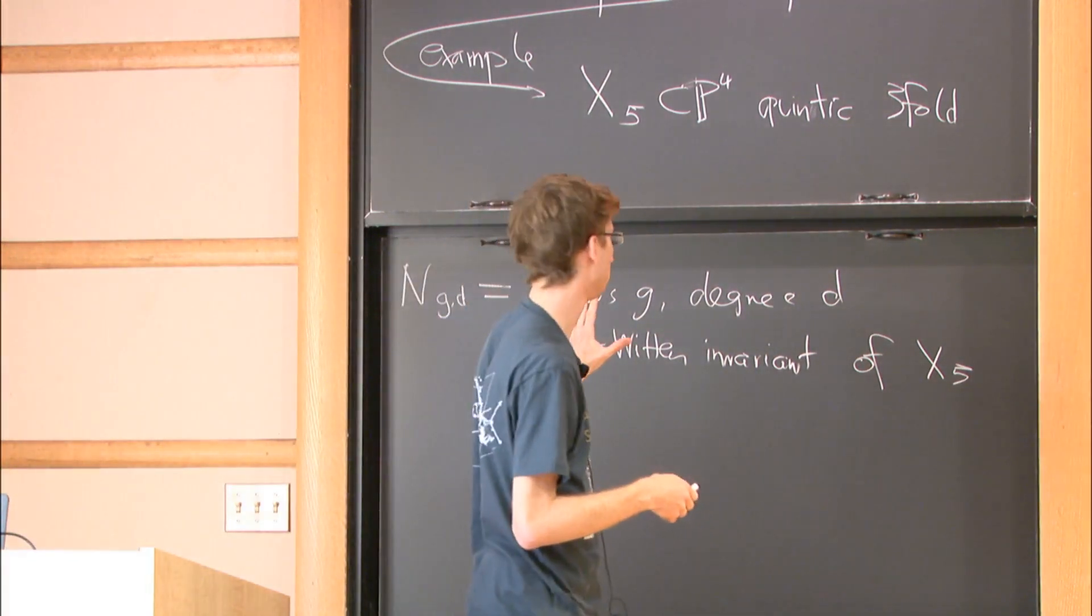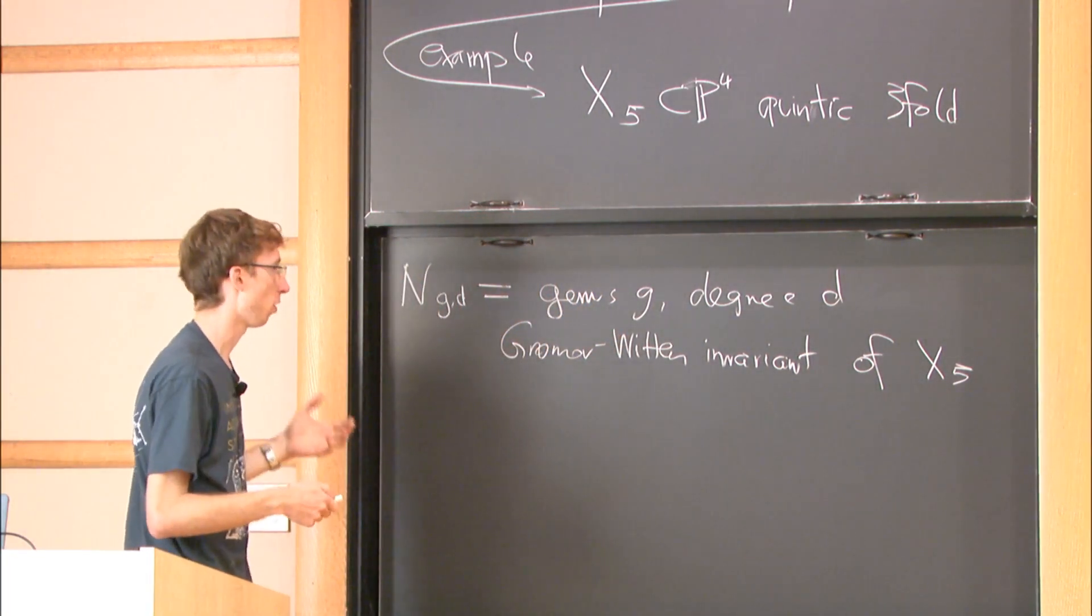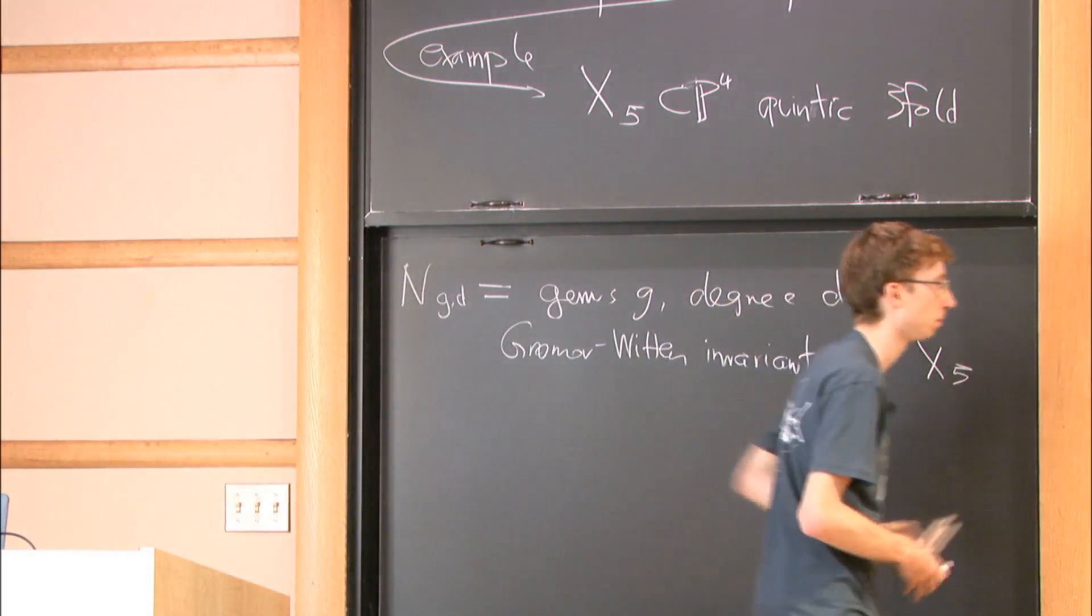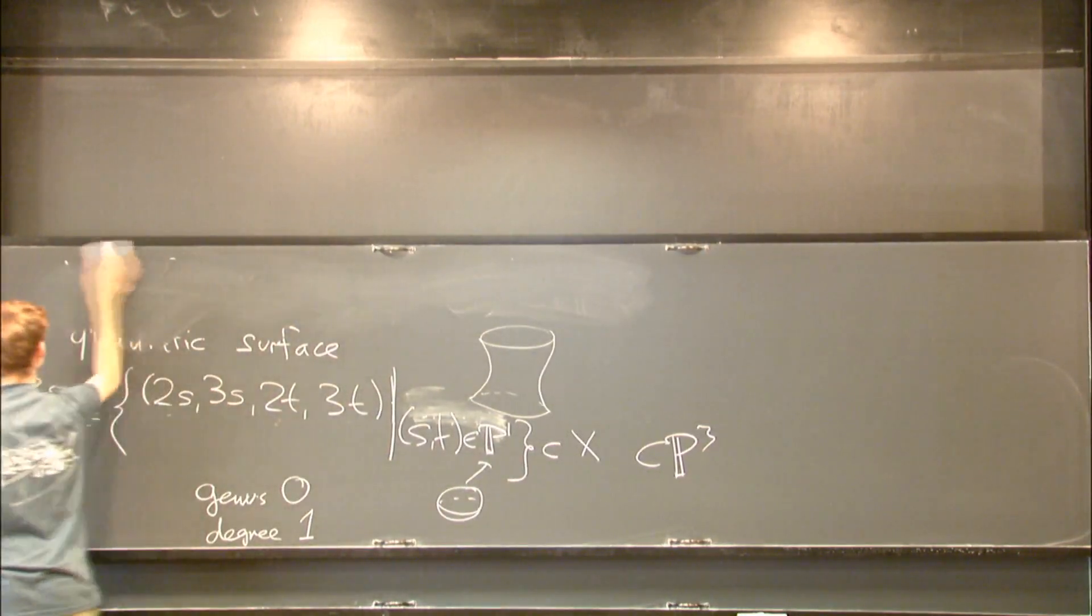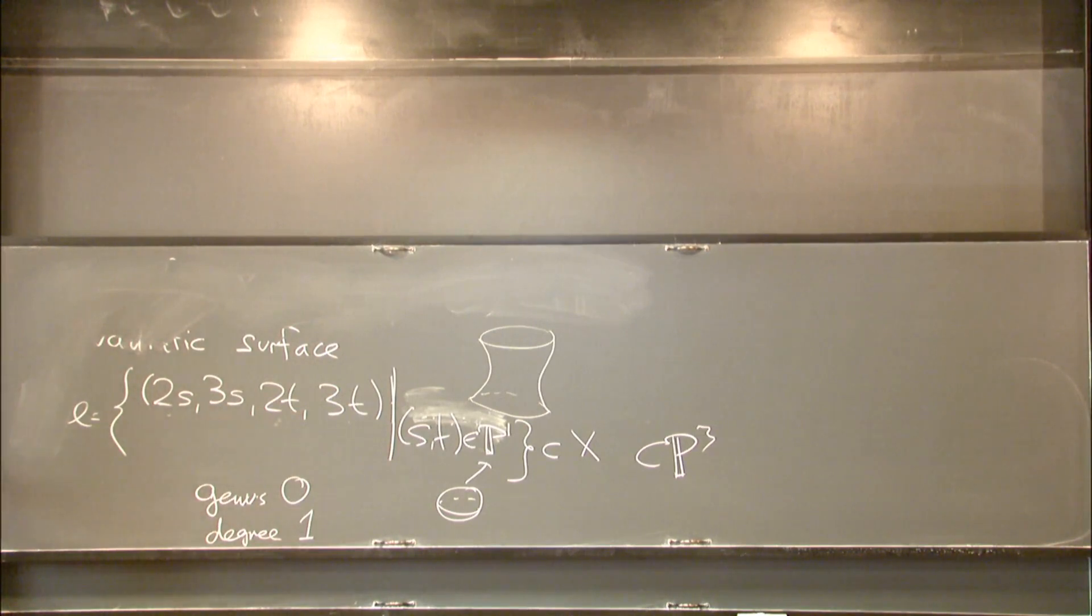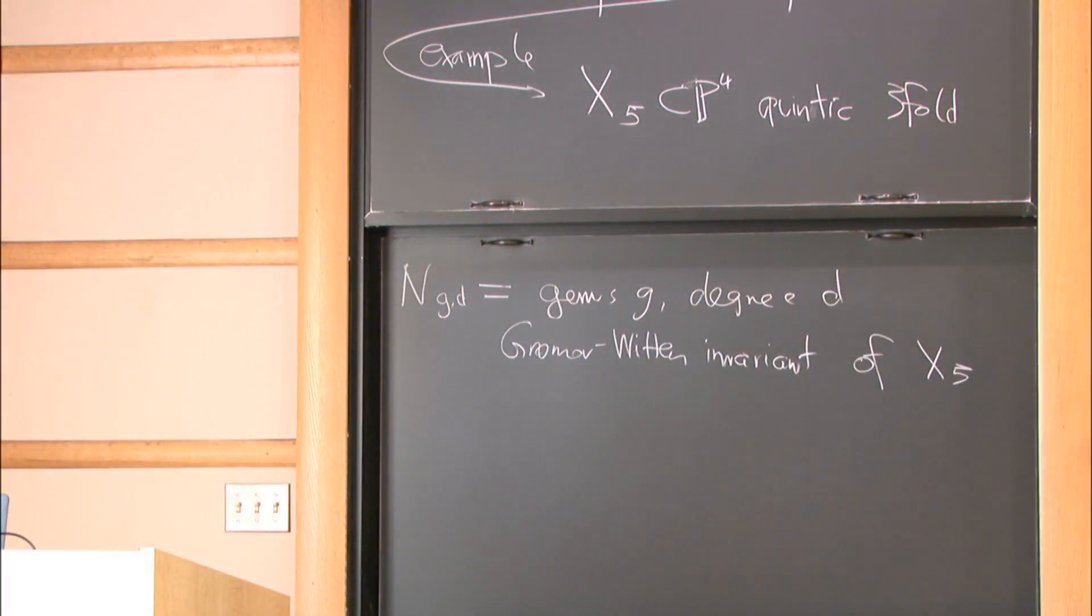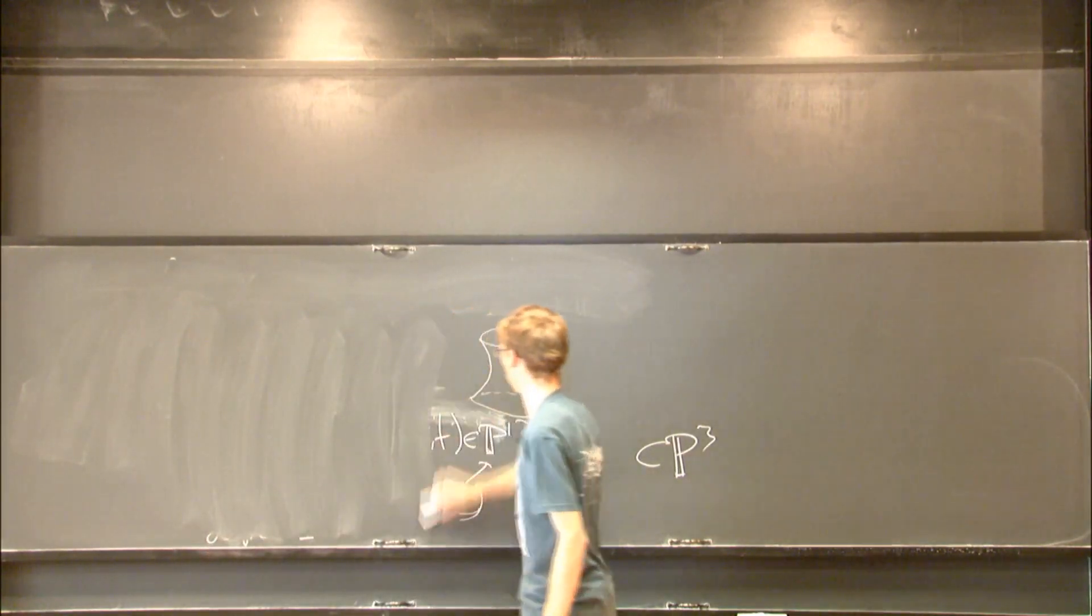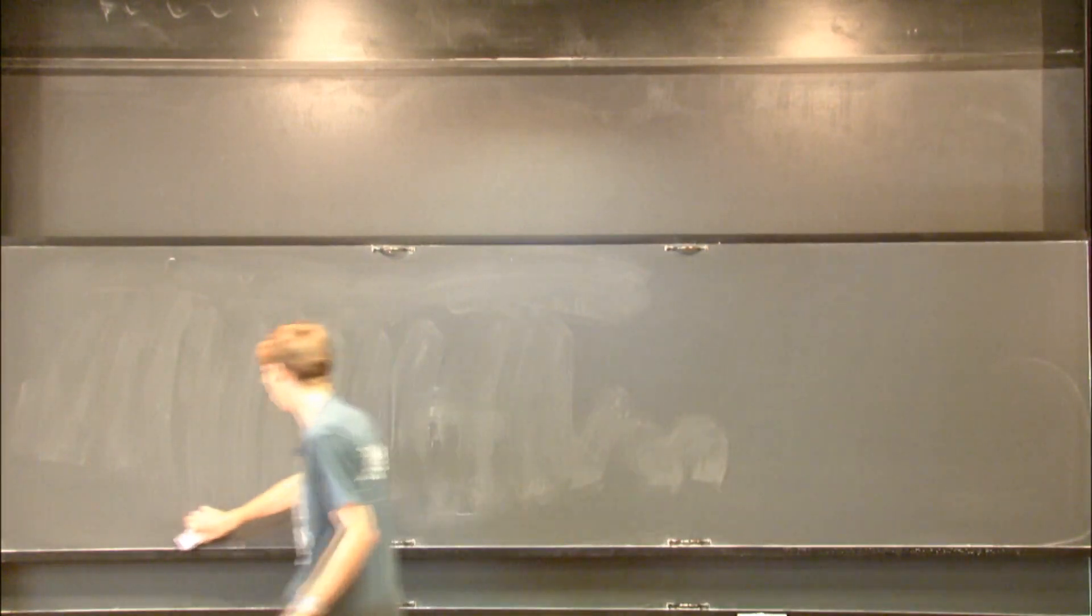Namely, they actually come from physics. They appear in the following important conjecture called mirror symmetry. Maybe as evidence that these are easy to compute, we actually know all of these in genus 0 and genus 1.